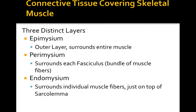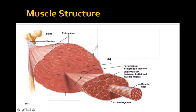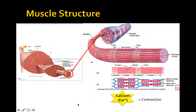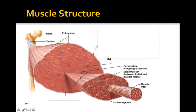So to recap: the epimysium is the outer layer surrounding the entire muscle; the perimysium surrounds each bundle of muscle fibers; and the endomysium surrounds each individual muscle fiber, sitting just on top of the sarcolemma. Going even further, right beneath the endomysium is the sarcolemma—a thinner sheath that encases each individual muscle fiber.